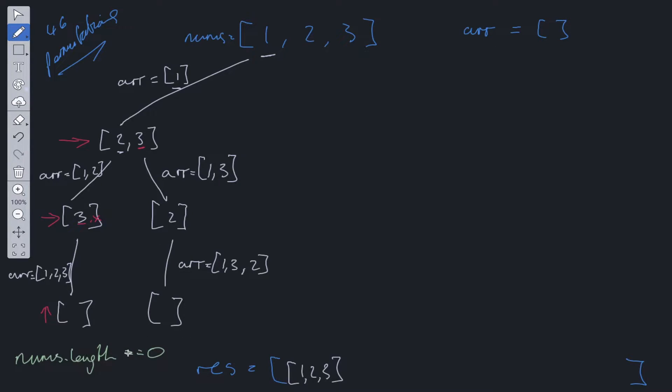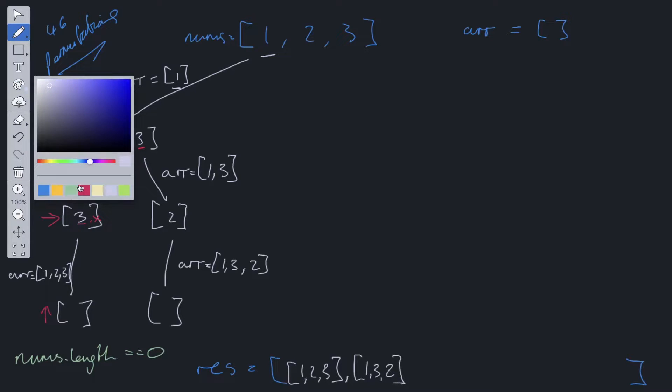What do we do when we have an empty array, when nums.length is equal to zero? We push that array into res. So one, three, and two. Now we backtrack.